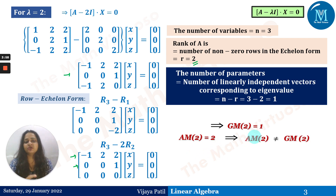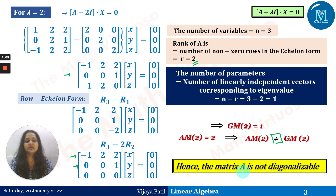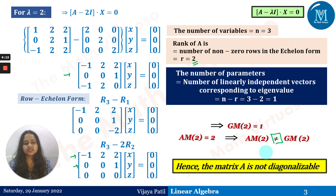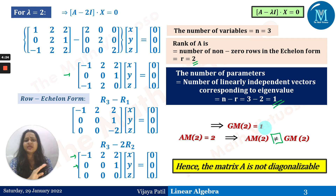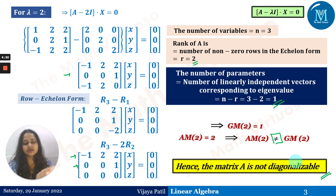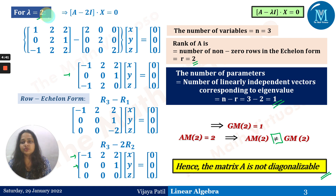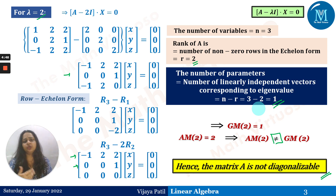The algebraic multiplicity of λ = 2 is 2, but the geometric multiplicity is 1 — they are not equal. Therefore, matrix A is not diagonalizable. Since we have already determined it is not diagonalizable, we need not find the eigenvector for λ = 2 or for λ = 1. We stop here: the answer is that A is non-diagonalizable.